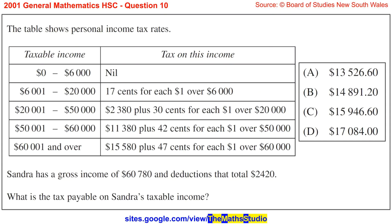Question 10. The table shows personal income tax rates. Sandra has a gross income of $60,780 and deductions that total $2,420. What is the tax payable on Sandra's taxable income?